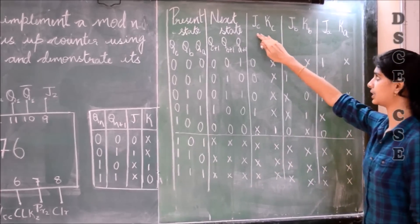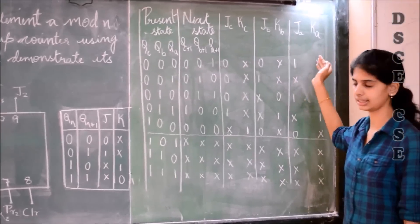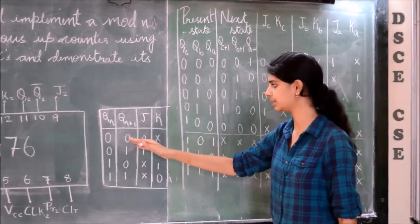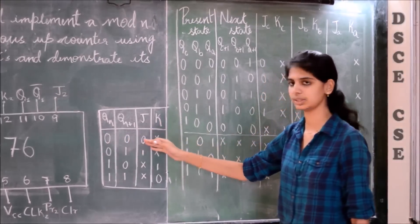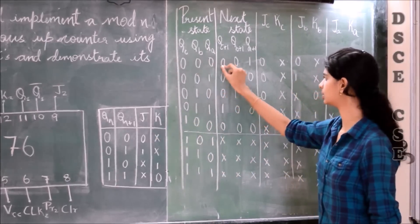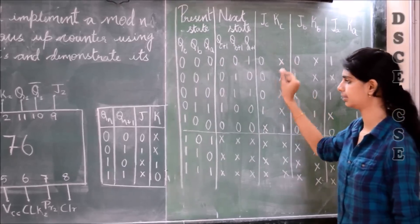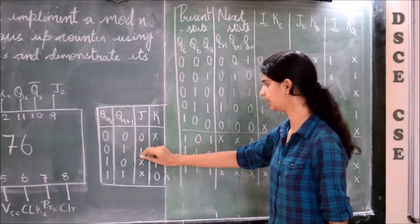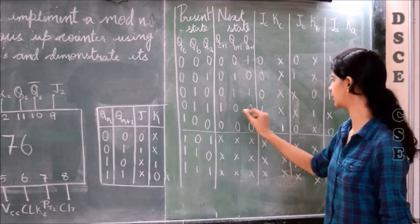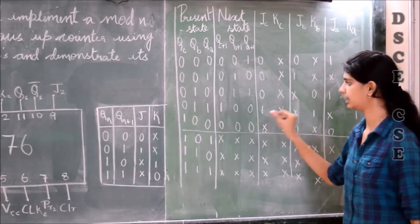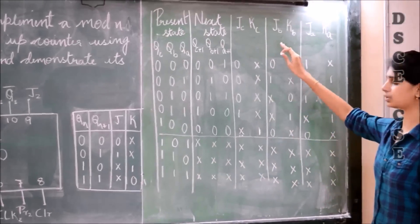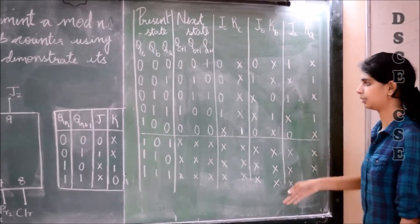Coming to the values of JC, KC, JB, KB, and JA/KA, we use the JK excitation table. Whenever Q and Q+1 are both 0, J and K values are 0 and don't care. If Q is 0 and Q+1 is 1, we get 1 and don't care. If Q is 1 and Q+1 is 0, we get don't care and 1. Similarly, we write the values of JB, KB, and JA/KA for all states.